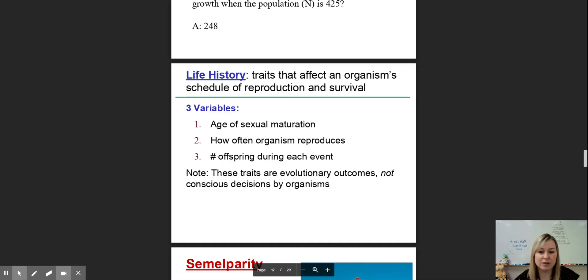Life history traits affect an organism's schedule of reproduction and survival. There's a couple things to consider: at what age are they able to mate and reproduce, how often that organism reproduces—is it just once in their life and then they die, or do they have multiple seasons? And how many offspring do they have during each reproductive event? It's worth noting the role of evolution. These life histories are not by chance. It's not like an organism decides this is what's best. These are shaped by evolution. The reason why they act this way is because it worked and helped them survive. It's not a conscious decision or choice.